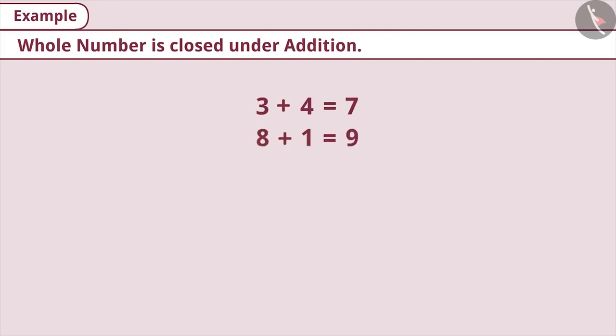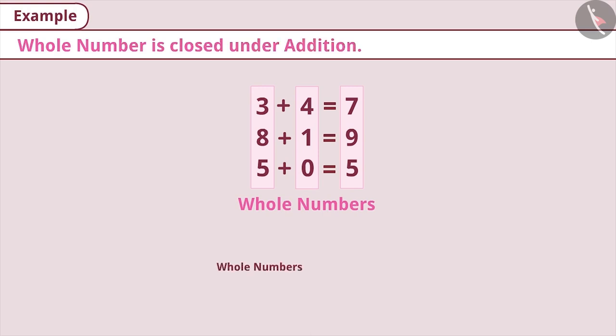Next example. Explain the fact, whole number is closed under addition. Let's take three examples for this. In these given examples, we added two whole numbers and their result was also a whole number. Similarly, if we take any two whole numbers A and B and add them, their sum A plus B will always be a whole number. Therefore, the collection of whole numbers is closed under addition.